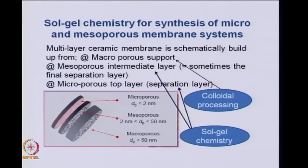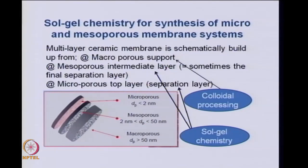Sol-gel chemistry is used in making membranes. One example is a multi-layer ceramic membrane made up of a macroporous support with three layers: a macroporous layer, a mesoporous layer, and a microporous layer. How you define these is by pore size — each layer is made through sol-gel chemistry or colloidal processing, and sol-gel chemistry typically gives mesoporous or microporous layers.